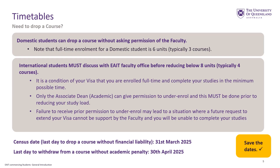International students are required to complete their studies in the minimum possible time. Only the Associate Dean Academic can give permission to under-enroll, and this must be done prior to reducing your study load. Failure to receive prior permission may mean a future request to extend your visa cannot be supported by the faculty. Take note of two very important dates: the census date, which is the last date to drop a course without financial liability, and the last day to withdraw from a course without academic penalty. Keep these dates saved in your calendar.